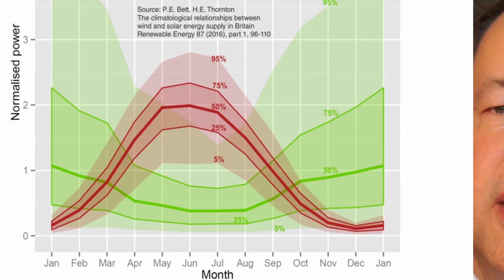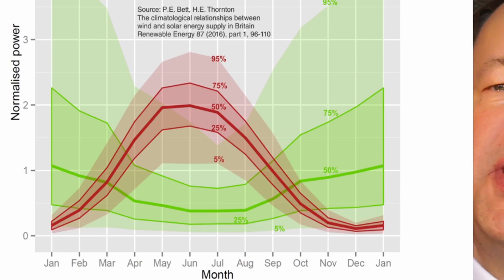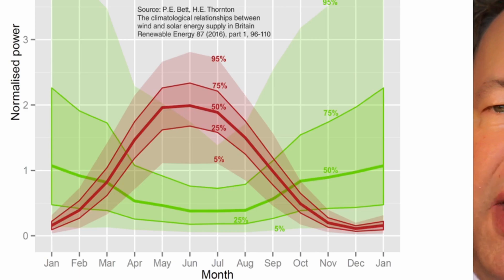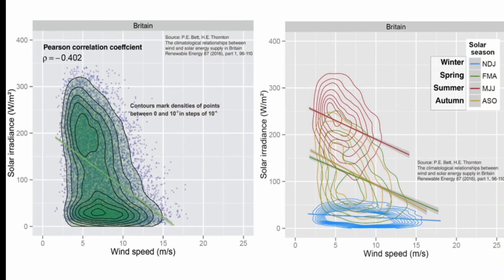In summer — May, June, July, maybe August — you have a lot of solar power in the UK and less wind power, while in winter you have little solar power (same as in Germany) but more wind power. So this combination of wind and solar is rather helpful. This study went further, showing different months and seasons. In winter you have more wind speed and little solar, and the same applies for summer and spring. In spring it is less correlated, which is a bit more critical. The overall Pearson correlation coefficient here is minus 0.402.